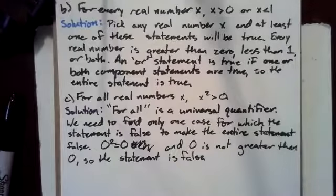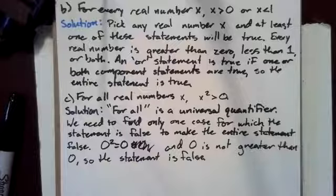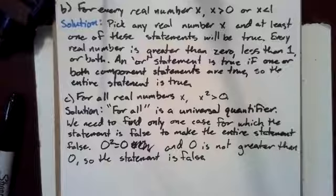For every real number X, X is greater than 0 or X is less than 1. We can pick any real number X and at least one of these statements will be true. Every real number is greater than 0, less than 1, or both. An or statement is true if one or both compound statements are true, so the entire statement is true.